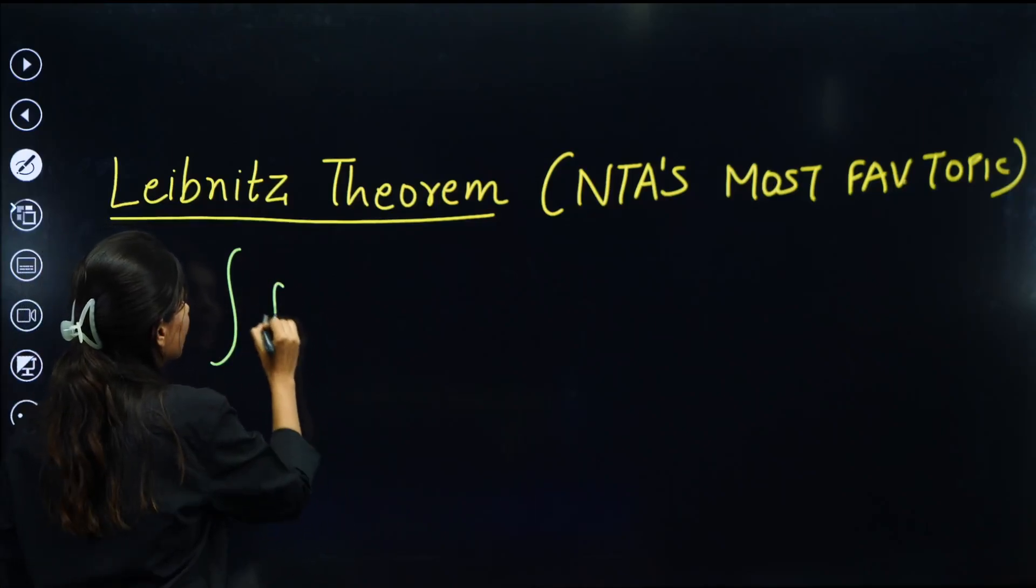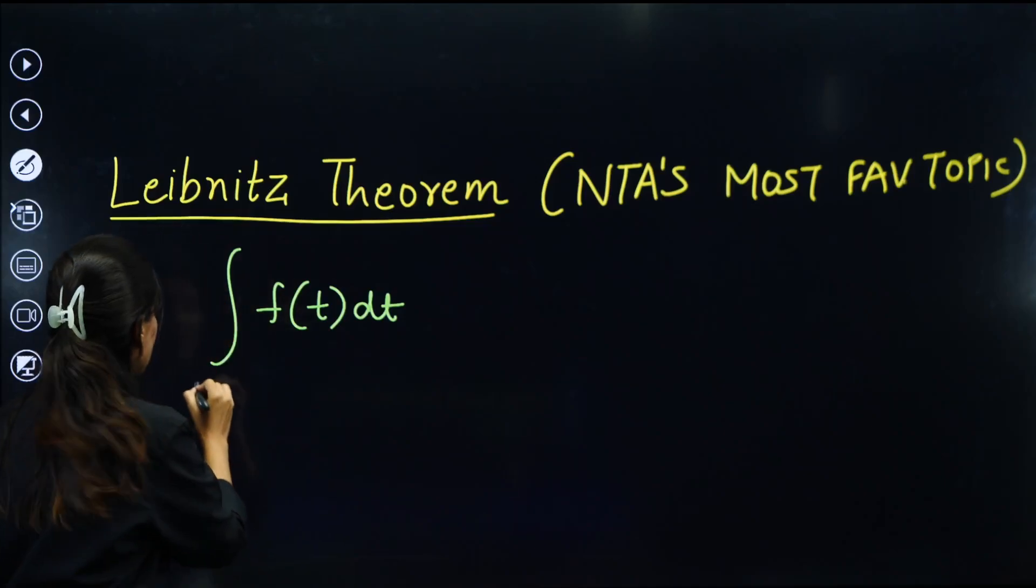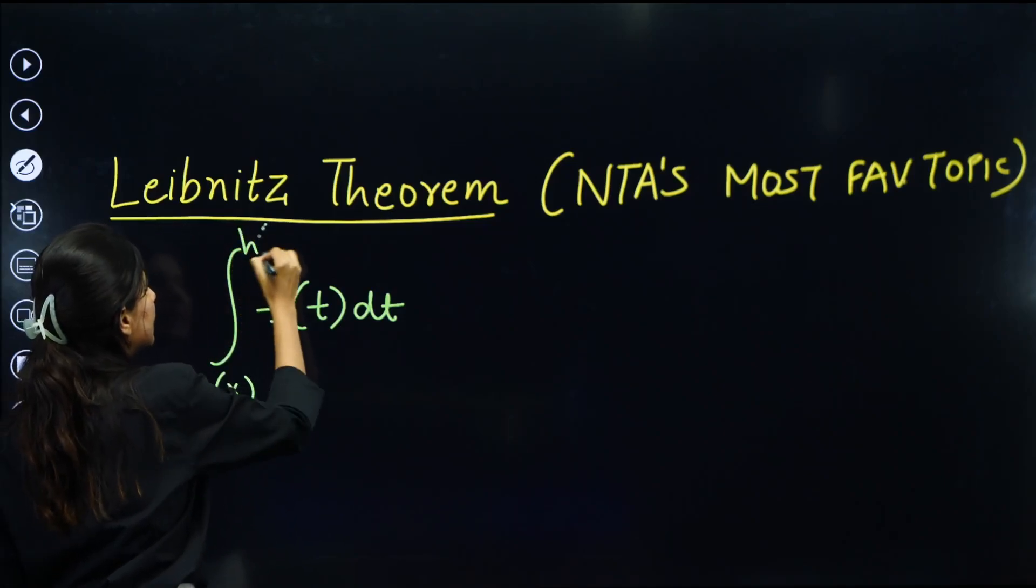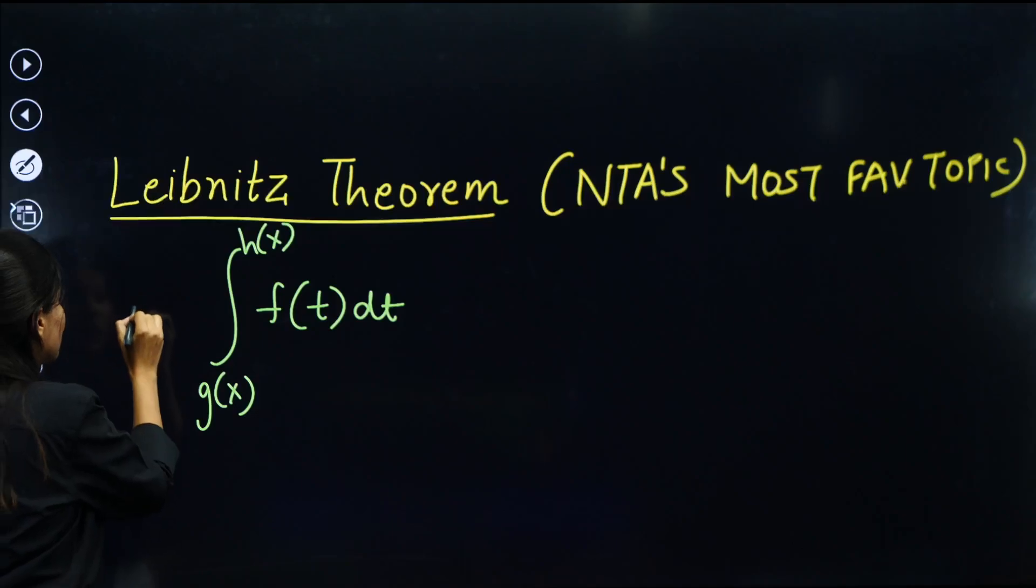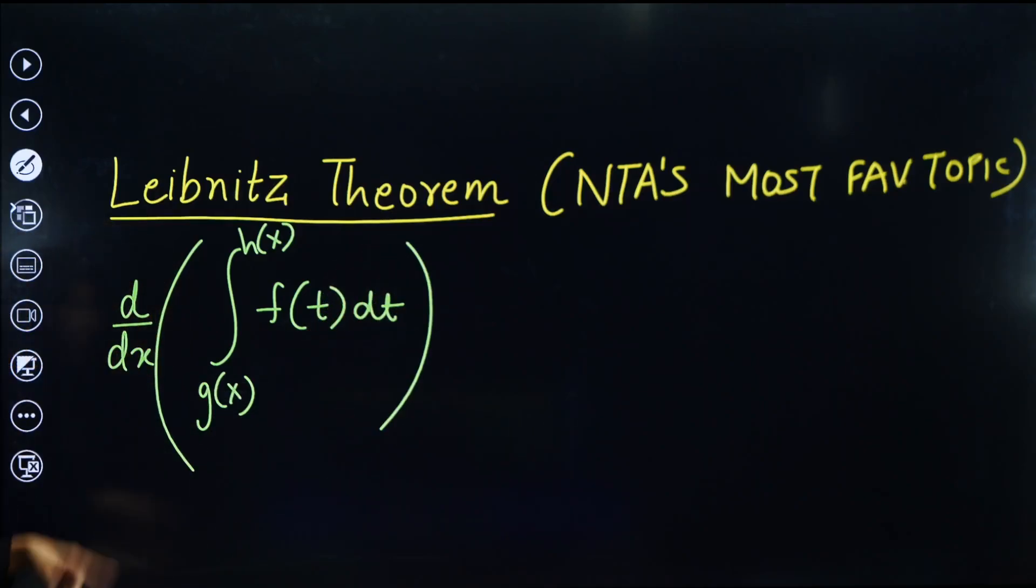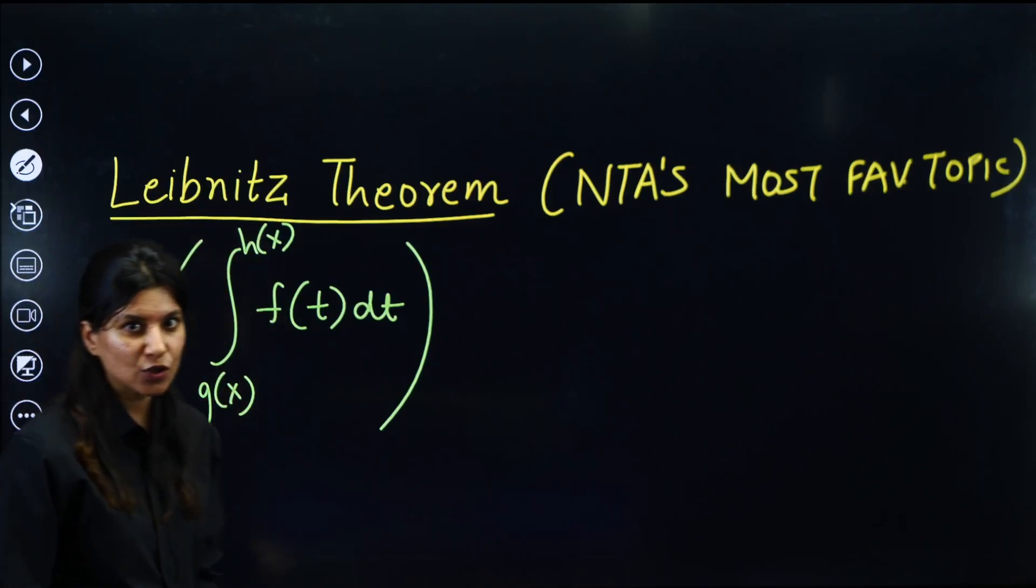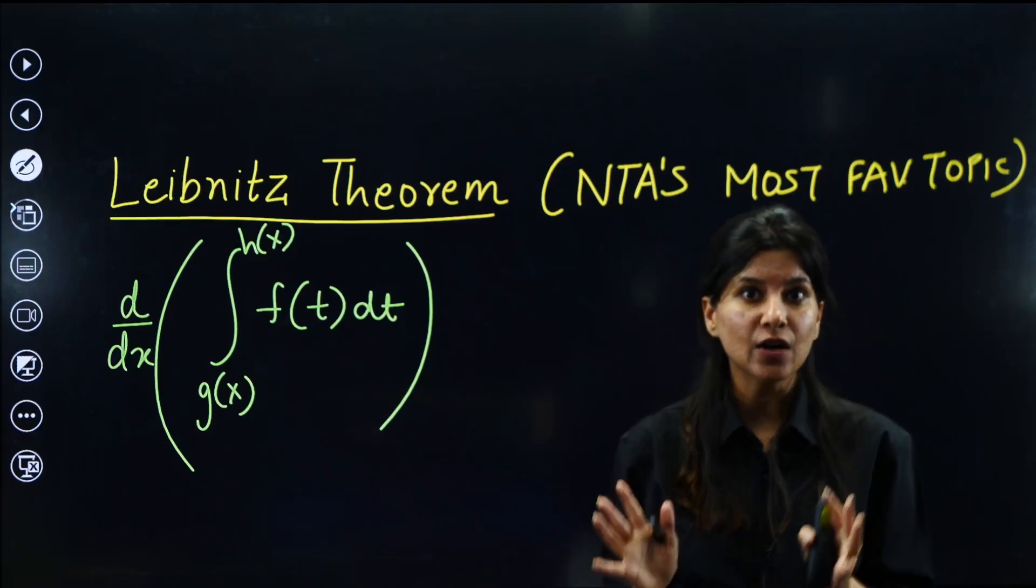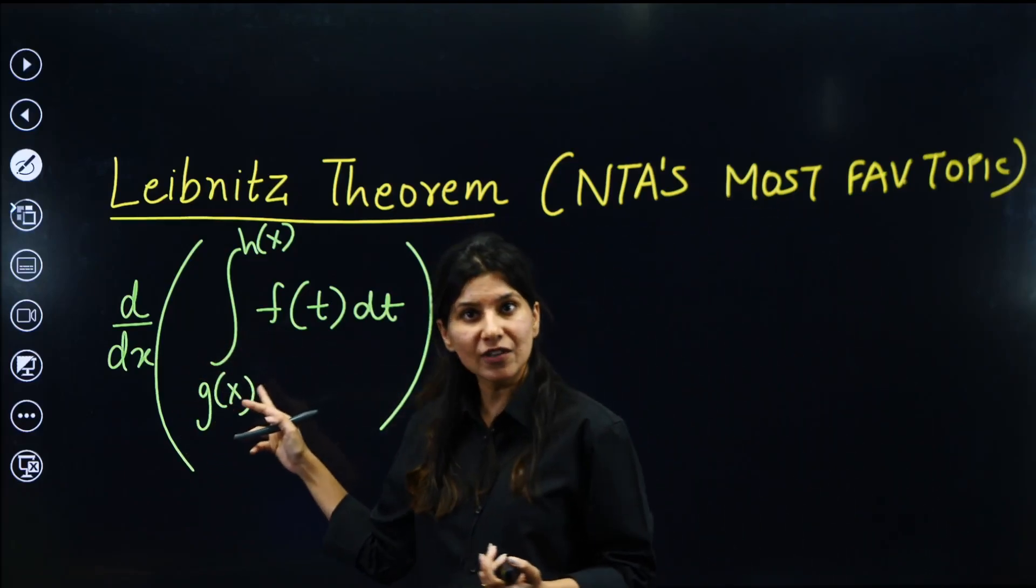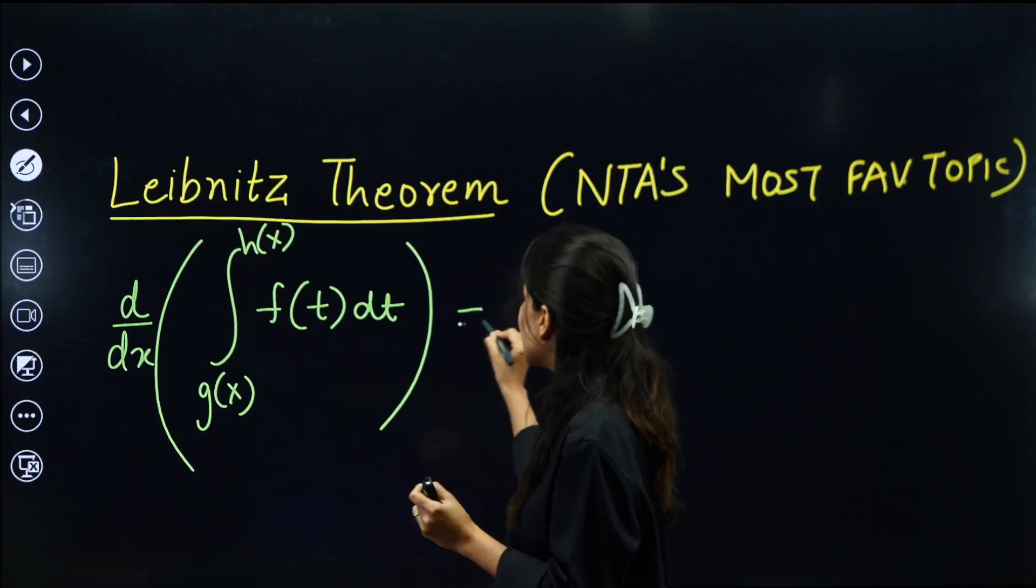Suppose you are having integration of f(t)dt and upper and lower limits are given as the variable. So this is your g(x) and this is your h(x). Can you see the difference of the variable? And now you are here to differentiate this with respect to x. If you wish to differentiate the integration of a function with respect to variable limits, then we have to apply Leibniz theorem. Please understand neither are we going to differentiate nor integrate, because integration and differentiation both will cancel each other.